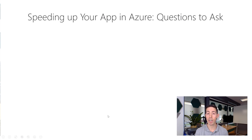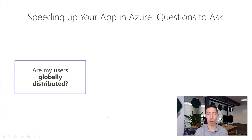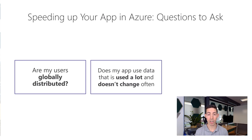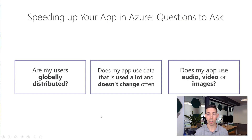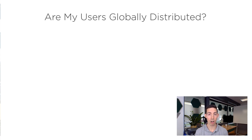To choose, you have to ask yourself a couple of questions. The first one is: are my users globally distributed? Which means, are my users everywhere in the world? You might have users in the United States but also in Europe, maybe some in Australia. If the answer is no, then we're done with this question and we move on to the next one.